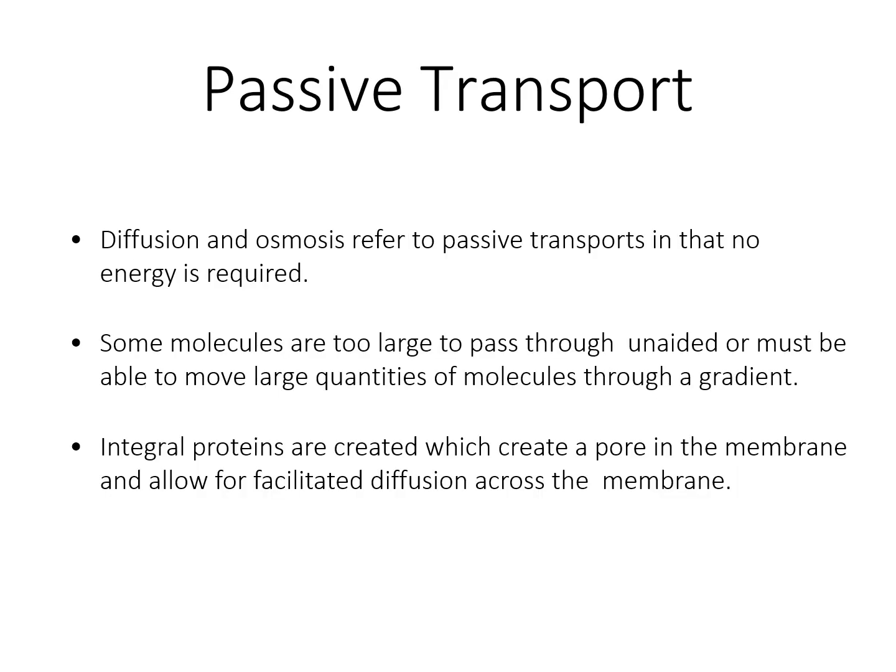Diffusion and osmosis refer to passive transport, in which no energy is required. Some molecules are too large to pass through unaided, or large quantities must be moved against a gradient. For these cases, integral proteins are created which form a pore in the membrane and allow for facilitated diffusion across the membrane.